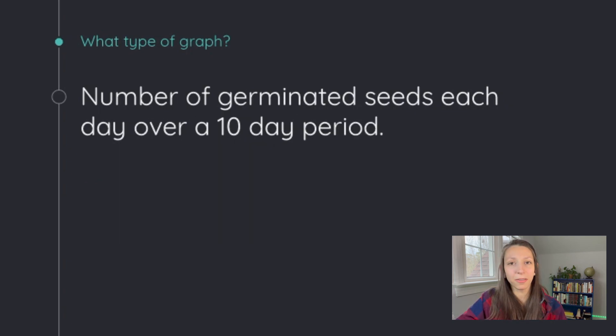The next one is the number of germinated seeds each day over a 10-day period. Think you know? The hint here is time. So because we're looking at a 10-day period, we're probably going to be using a line graph to demonstrate change over time.